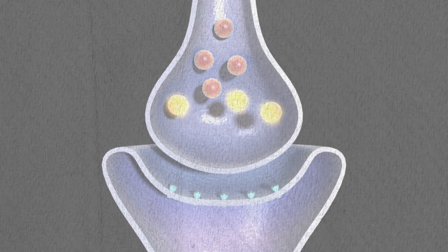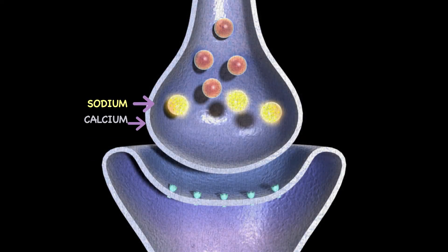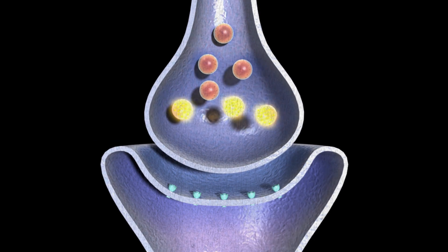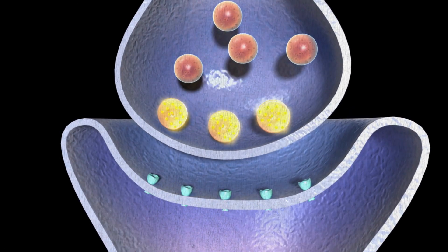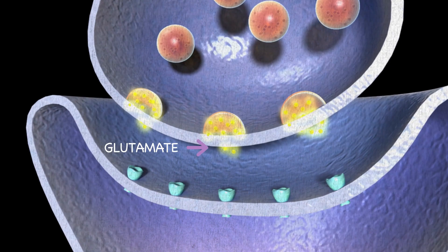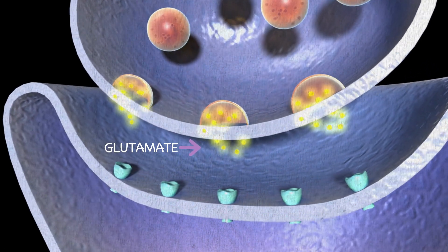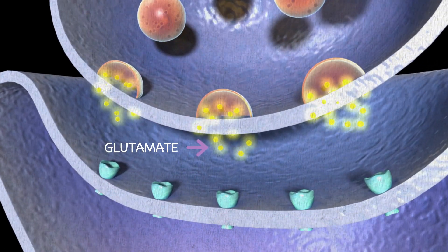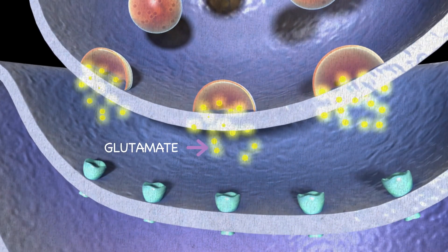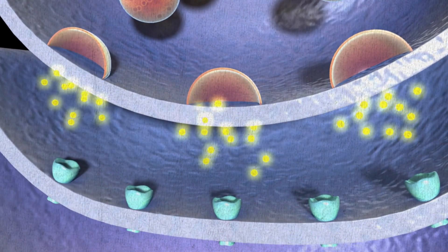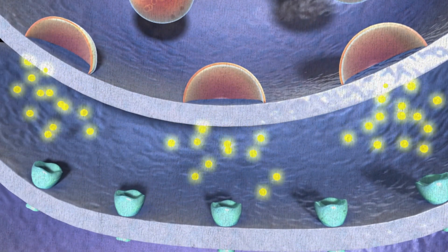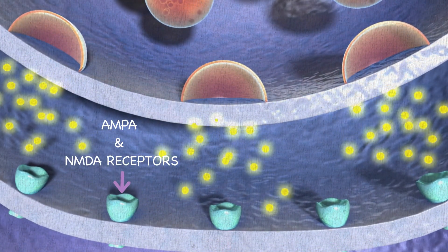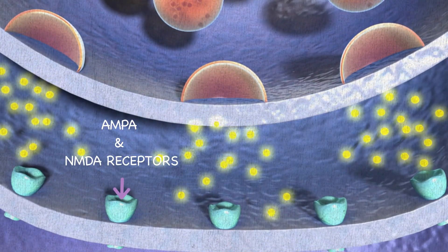To understand how a seizure happens, let's follow what happens during an action potential. First, an influx of sodium and calcium starts through the ion channels. This leads to the release of glutamate from the vesicles in the presynaptic terminal. Glutamate then binds to its receptors — the AMPA and NMDA receptors — on the postsynaptic neurons.